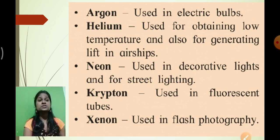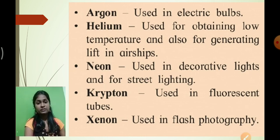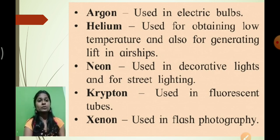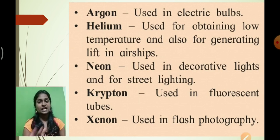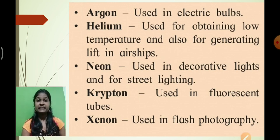Argon is used in electrical bulbs. Helium is used for maintaining low temperature and generating lift in airships. Neon is used in decorative lamps used during festivals like Diwali. Krypton is used in fluorescent tubes, and xenon is used in flash photography. These are gases present in air that are used for our benefit in daily life.